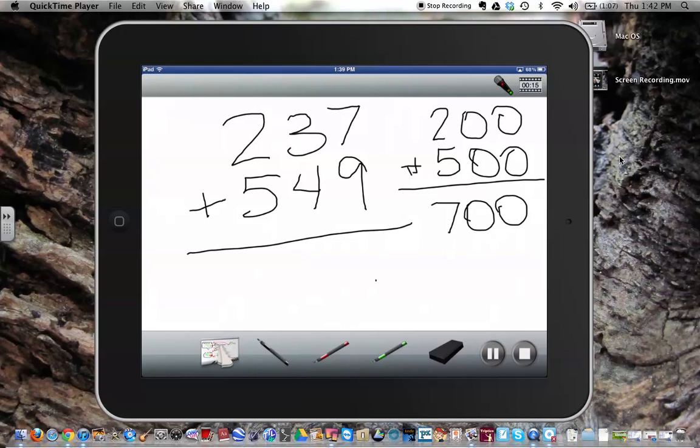My next step is to take 30 plus 40, add those together, and get 70.